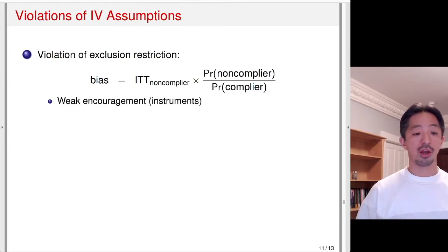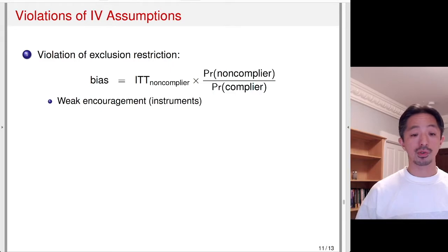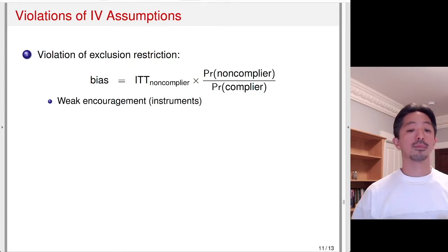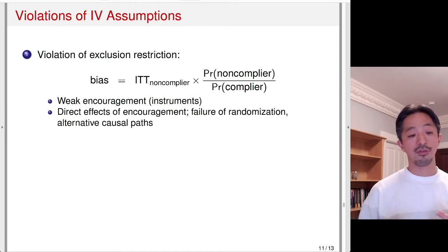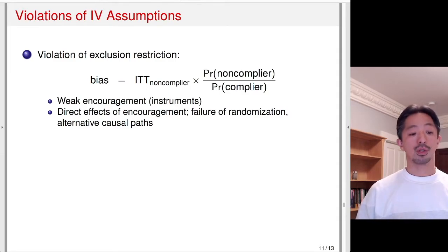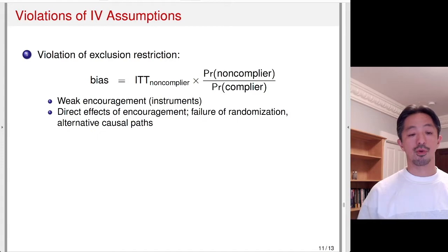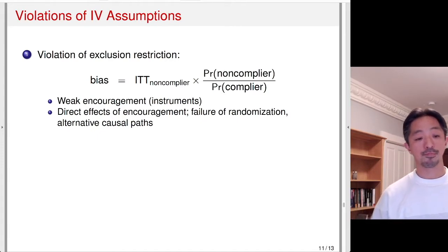A weak instrument is a case where the proportion of compliers is very small — the instrument moves only a small proportion of people in a certain direction. When that happens the bias can be large because the denominator, the proportion of compliers, is small, making the second term larger. And if there's a direct effect of encouragement other than through the treatment, the first term could be very large. If there's an alternative causal path, or the encouraged and non-encouraged groups aren't otherwise the same, the bias can be large.